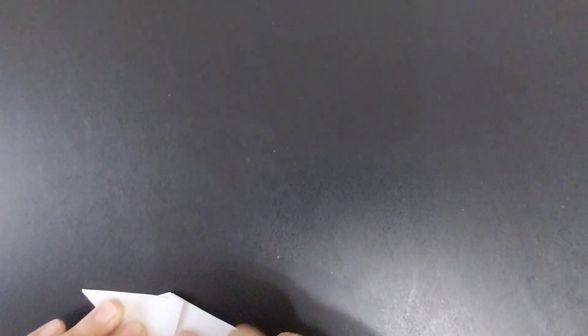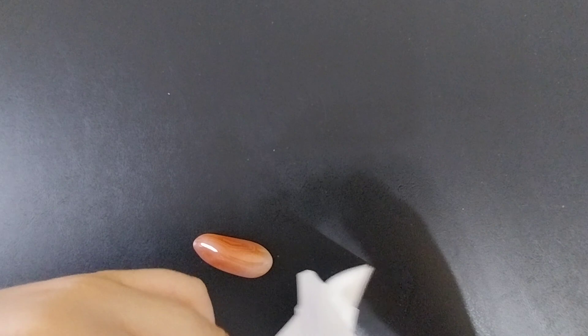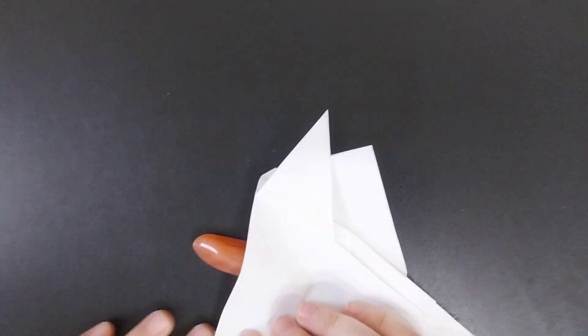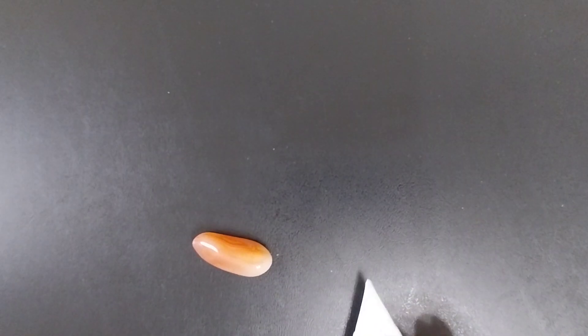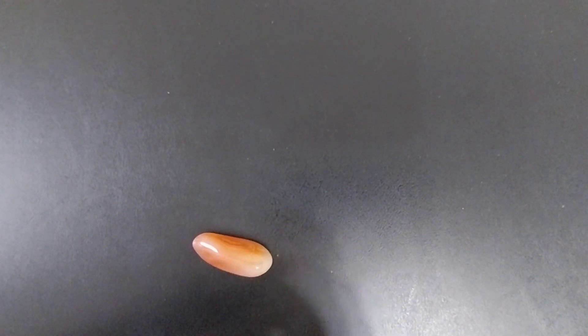You can match the tail fins up, make sure they're matching. They're not, so correct your mistake. Inside reverse fold them using the creases that you made. When you inside reverse fold the one that you made the mistake on, make sure to match it up again.